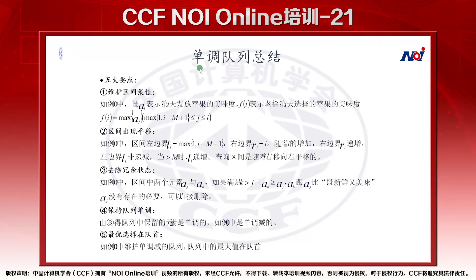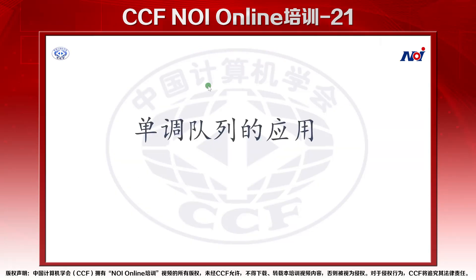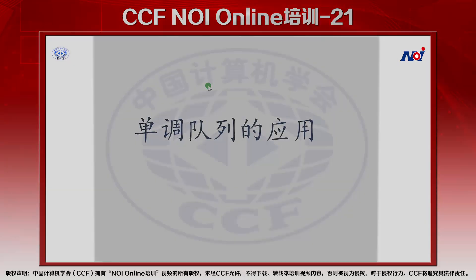第四点，保持队列的单调性：经过第三点的去冗余的操作，使得队列保留下来的元素是单调的，单调递增或者是递减。第五点，最优选择在队头：队列当中是单调递增或单调递减的，最优的元素是在队列的队头，这样就节约了查找的时间。这一节课我们到这里，下一节课我们再来学习单调队列的应用。